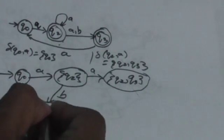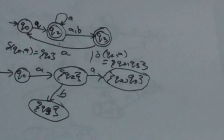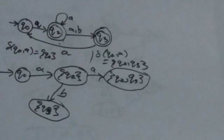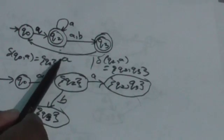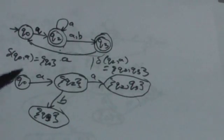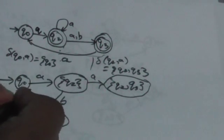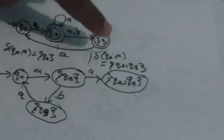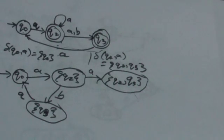Now we have two new states: {Q2, Q3} and Q3. Let's find the transition of state Q3 first. For input symbol A, the automaton jumps from Q3 to Q0, so there is only one transition. We add this transition to the DFA. For input symbol B, there is no transition in the NFA from state Q3, so we leave it.